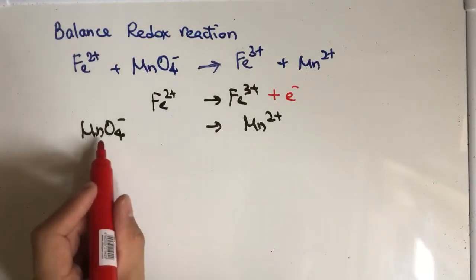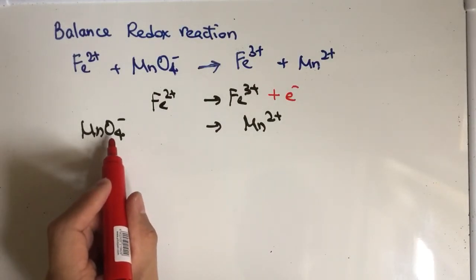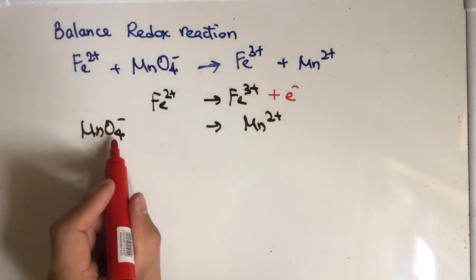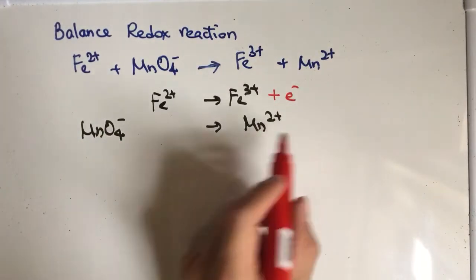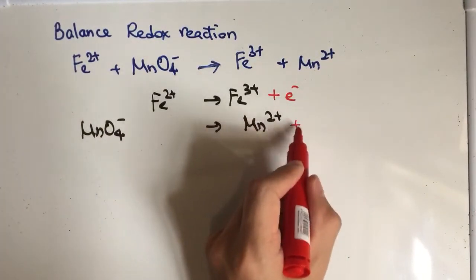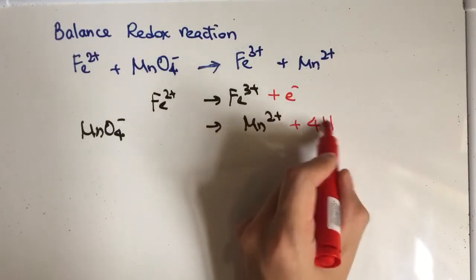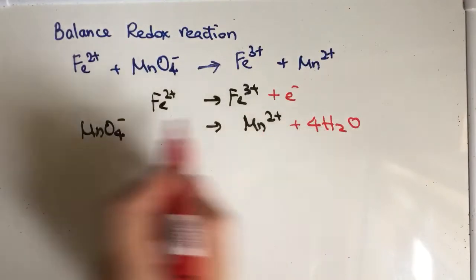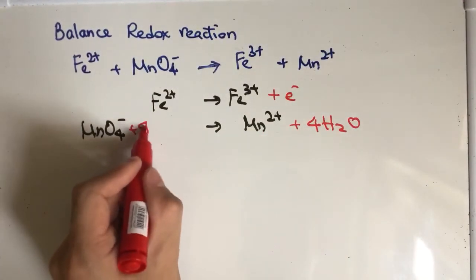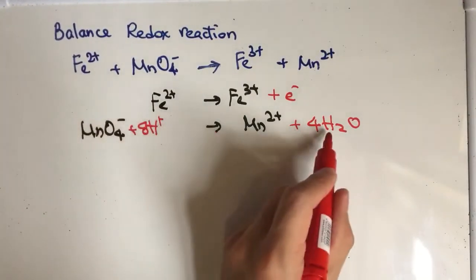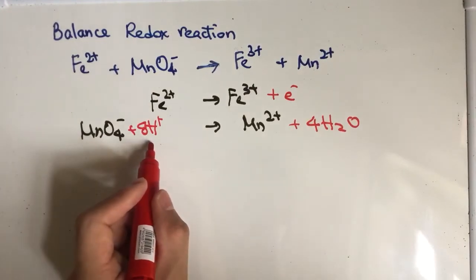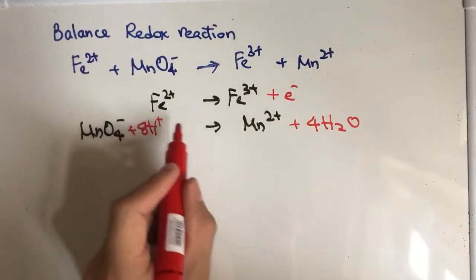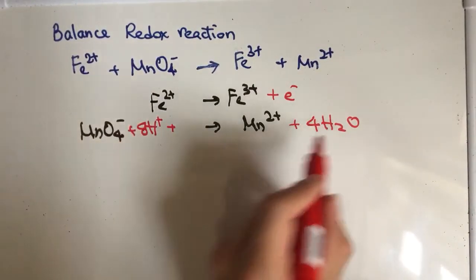And for permanganate ion here, the reactant side we have oxygen, and for the product side we don't have oxygen. So we have to put water onto the product side here. And after that, you have to put hydrogen ion on the reactant side. And last but not least, you have to balance the charge.